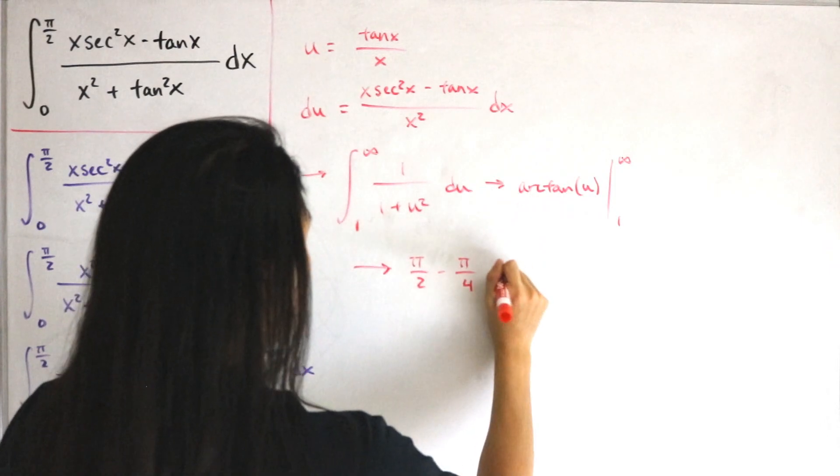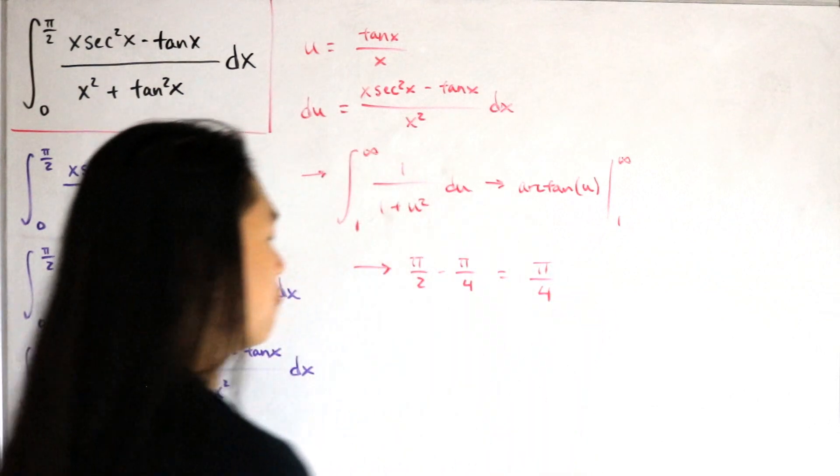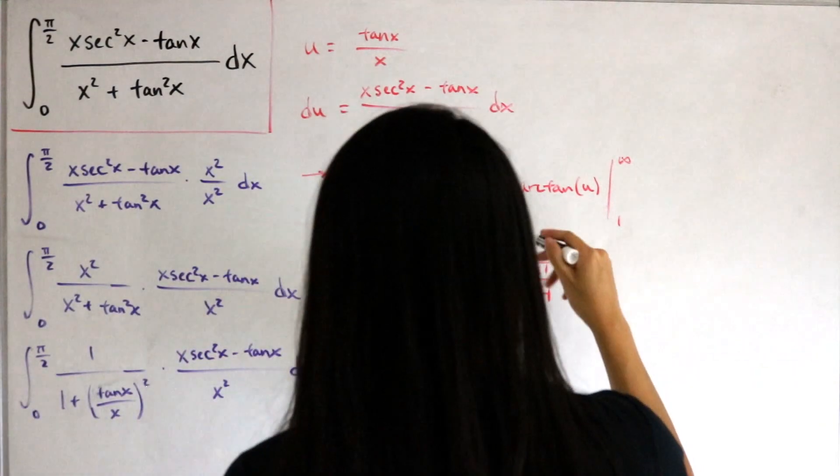And so due to subtraction, the final answer is just a nice and simple π/4. So with that, that's our final answer to this integral that looks complex but you can actually solve really fast.